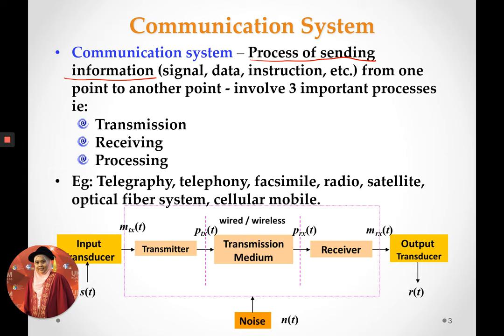We have already used communication systems since we were kids up until now. Communication systems have evolved to be more modern, more sophisticated, and faster than what our grandparents used. Examples include telegraphy, telephony, facsimile, radio, satellite, optical fiber systems, and cellular mobile.